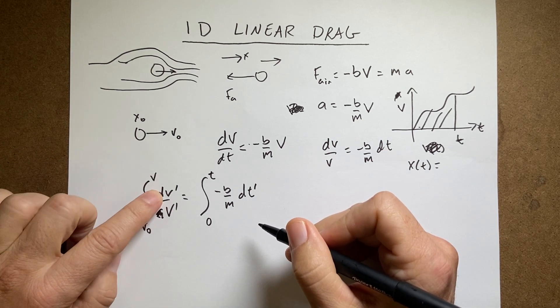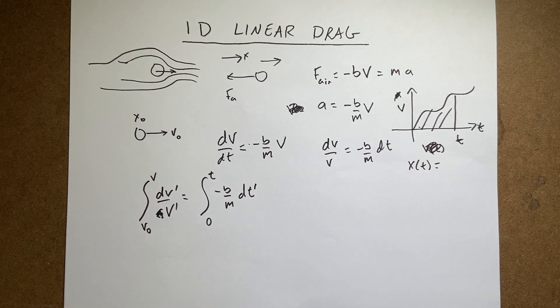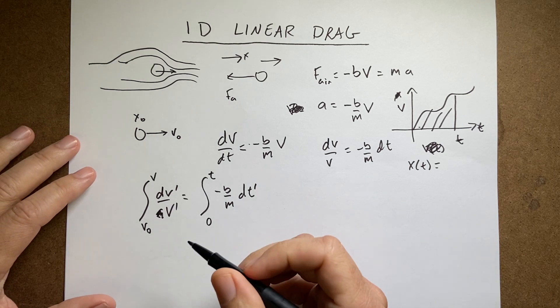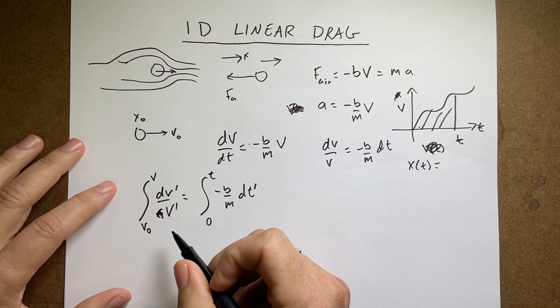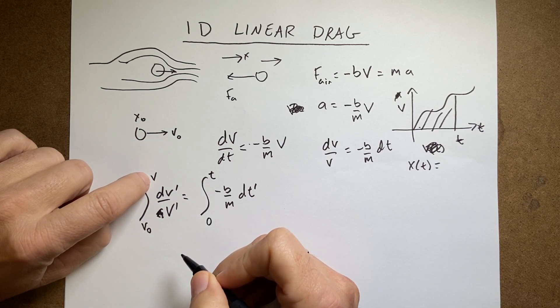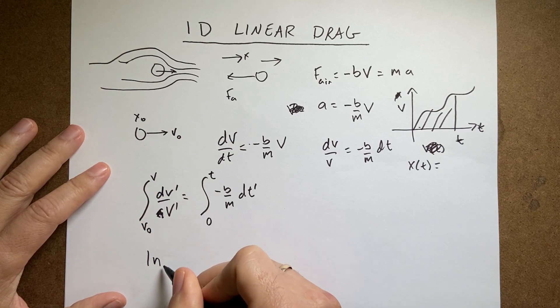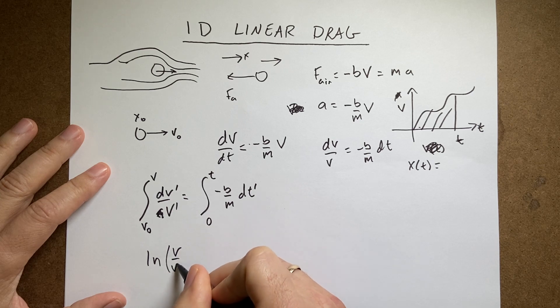So if I integrate this side, I have dV prime over V prime. What do I take if I take the derivative? I get 1 over V. And the answer is the natural log of V. And this is actually really nice to do it this way because if I integrate this side, I get the natural log of V minus the natural log of V naught, which I can actually write as the natural log of V over V0.